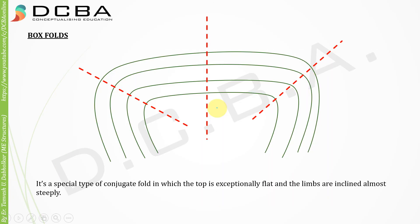Then we have box fold — it is a special type of conjugate fold in which the top is exceptionally flat and the limbs are inclined almost steeply, so it almost looks like a box itself, which is why it is called a box fold. That's it for today's lecture; in the next lecture we'll be learning more classifications of folds. Take care, thank you.